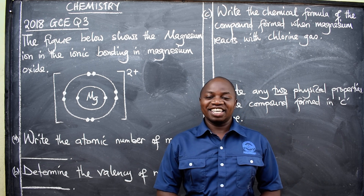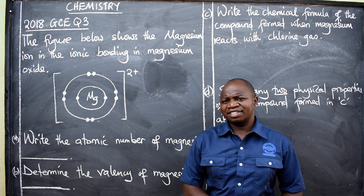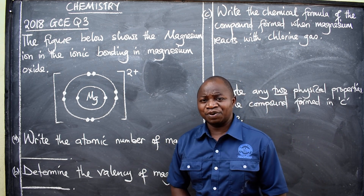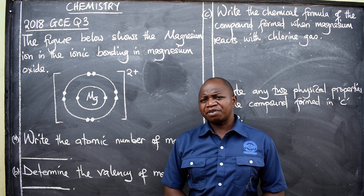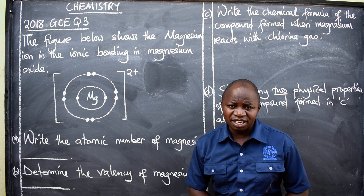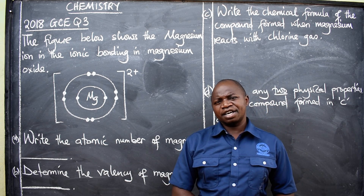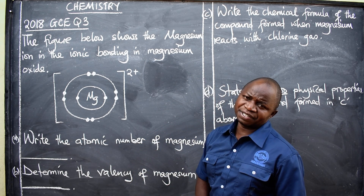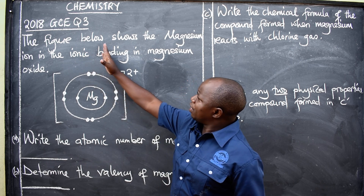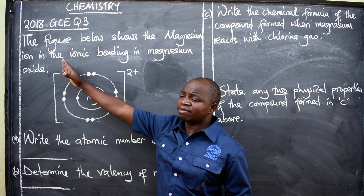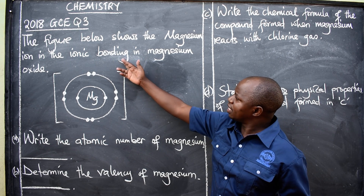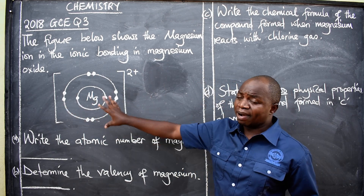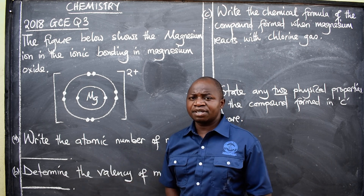Greetings to you all, ladies and gentlemen. This is chemistry. In this video we want to look at a question from the 2018 General Certificate of Education GCE — question number three. The question reads: the figure below shows the magnesium ion in the ionic bonding in magnesium oxide. We have this figure showing the magnesium ion, and then we have questions based on the diagram.